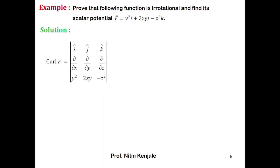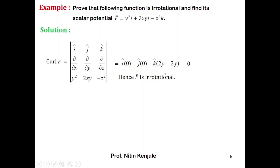So we have i·(0) minus j times (∂/∂x of −z² which is zero, minus ∂/∂z of y² which is again zero), and finally k times (∂/∂x of 2xy which is 2y, minus ∂/∂y of y² which is 2y). So 2y − 2y = 0. Therefore curl of f bar equals 0·i − 0·j + 0·k = 0, and hence f bar is irrotational.